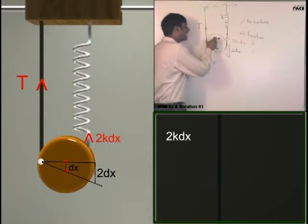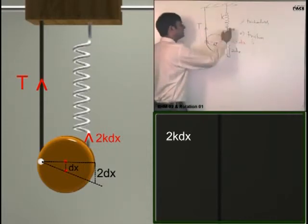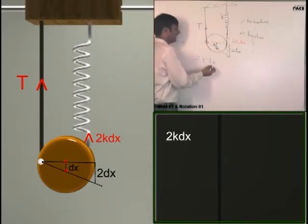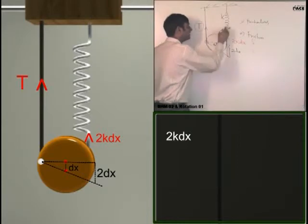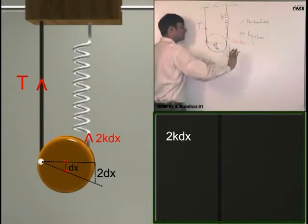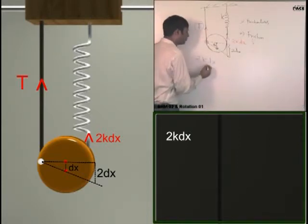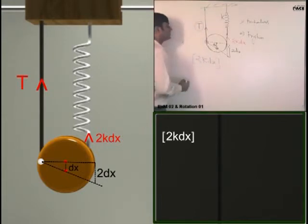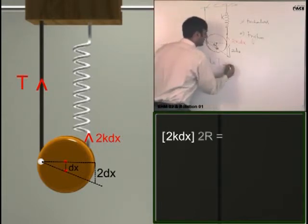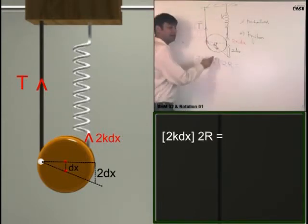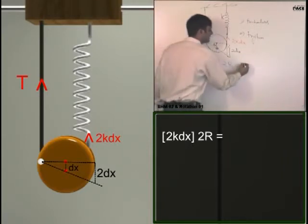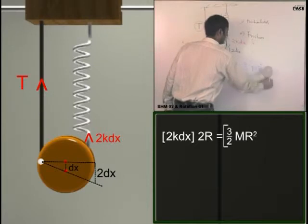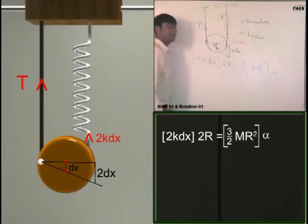Clear? Now due to our extension, there is extension in the spring which is 2k dx and torque due to 2k dx, tension is already passing through this point. So zero torque. Mg and the already extension I will not consider. This 2k dx into what? Force into perpendicular distance R is equal to I alpha. Disc is MR^2 by 2 plus MR^2. How much is it? 3 by 2 MR^2. I into alpha. Is this fine?